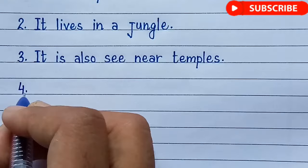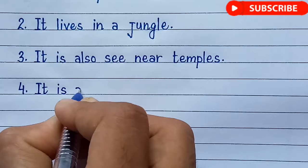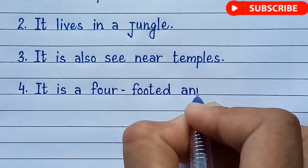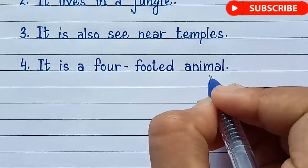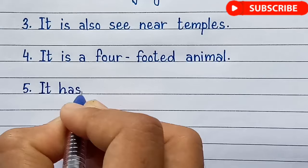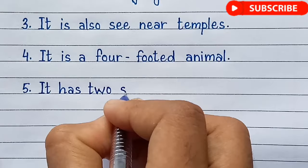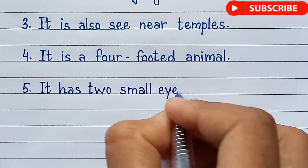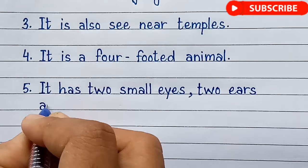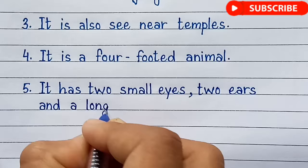Fourth line is: It is a four-footed animal. Fifth line is: The monkey has two small eyes, two ears and a long tail.